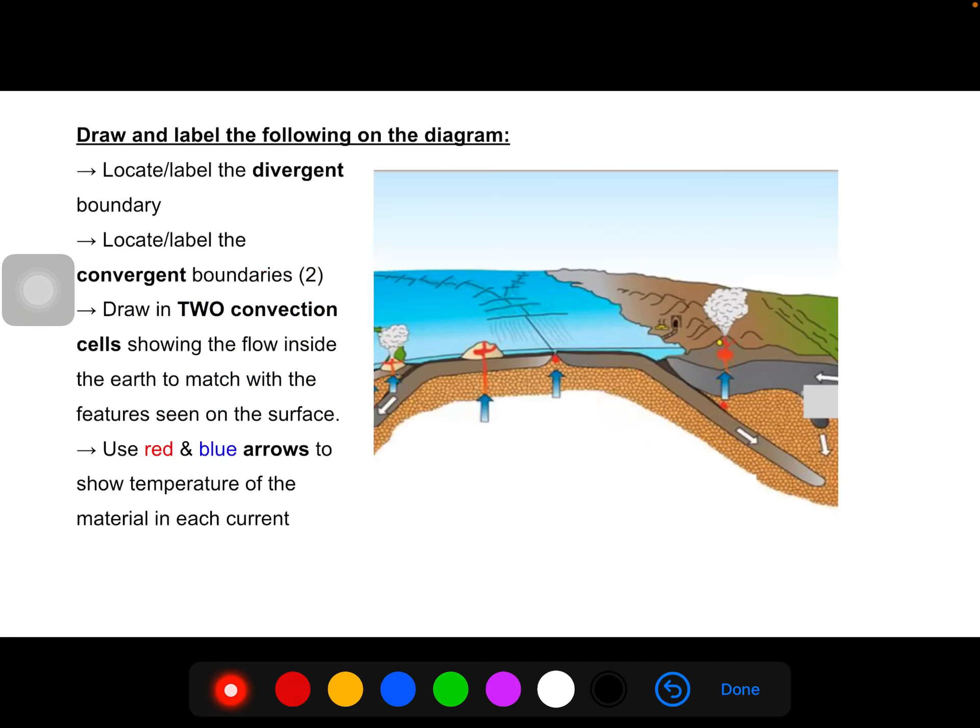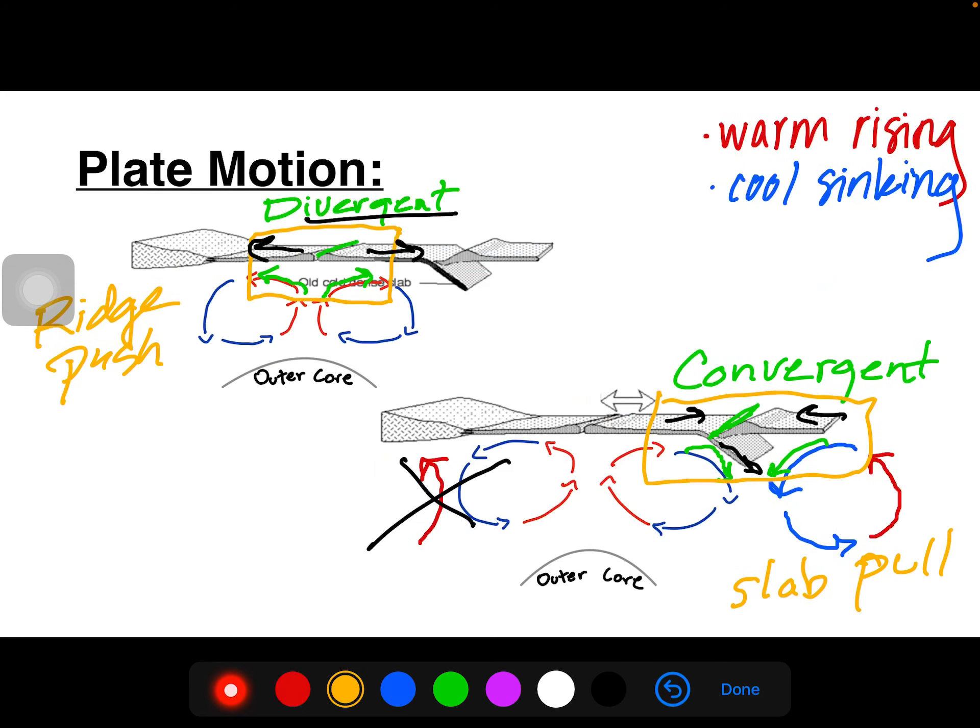So here's what you had at the bottom of your explained two is you were looking for these divergent and convergent boundaries and then drawing in just two convection cells to match. So the key things that we're looking for to differentiate between our two boundaries, here we have this small ridge that makes our divergent boundary where the plates would move apart. And here we have something called subduction zone where the crust is being pulled in because of the sinking mantle material.